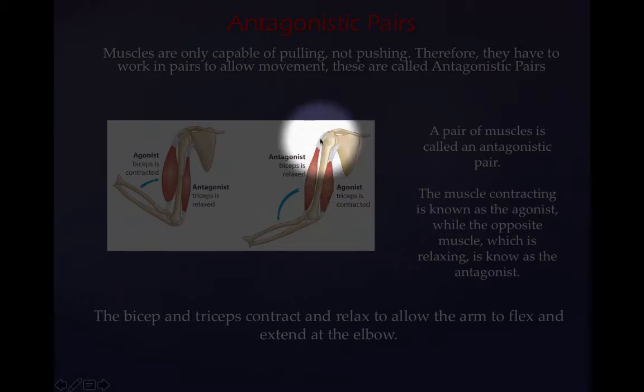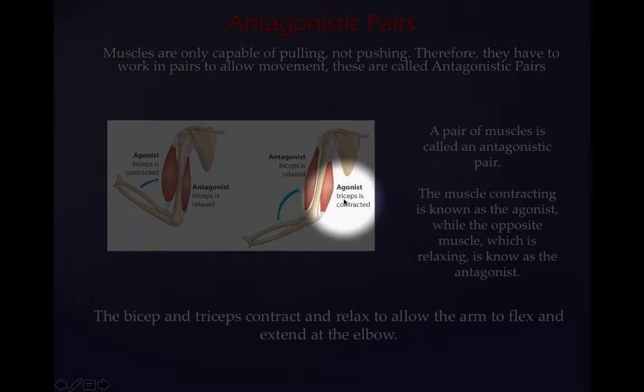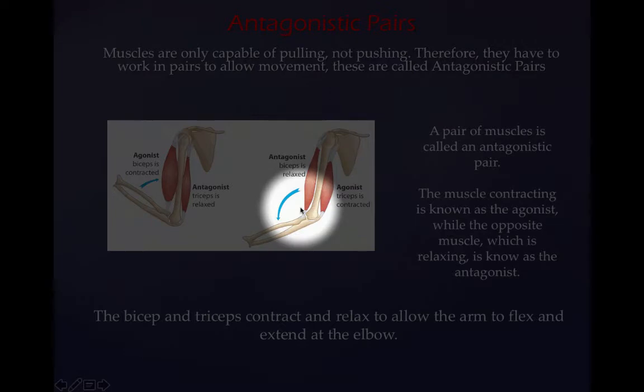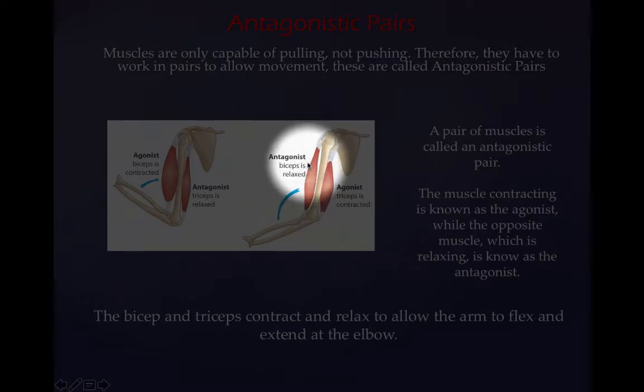On the way back down, the roles switch over. So the tricep becomes the agonist and contracts, moving the forearm towards the floor. And your antagonist, the bicep, relaxes.